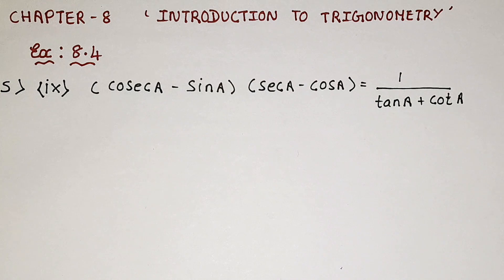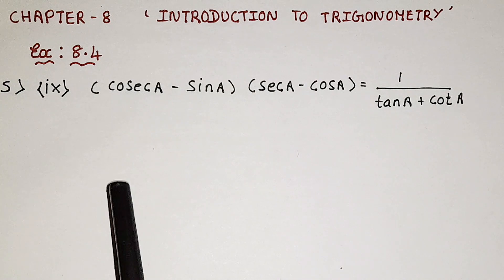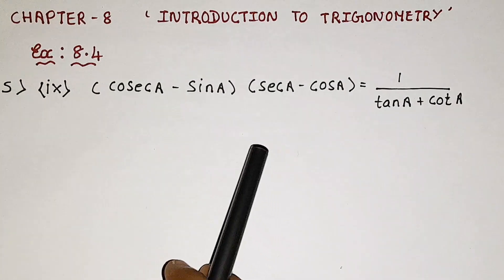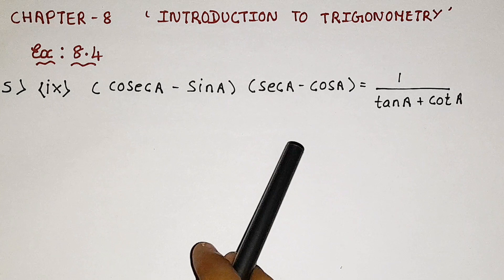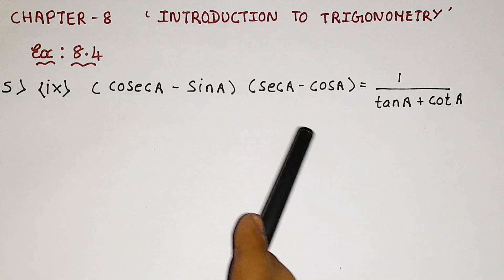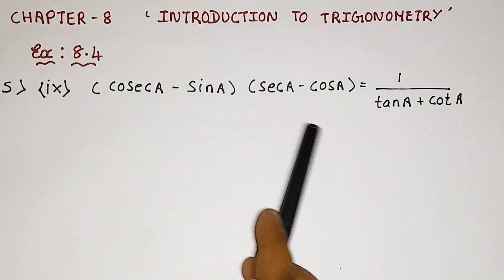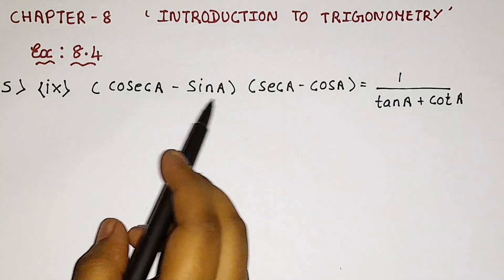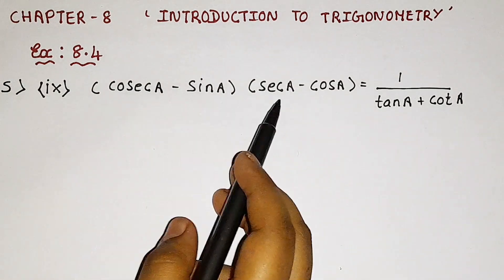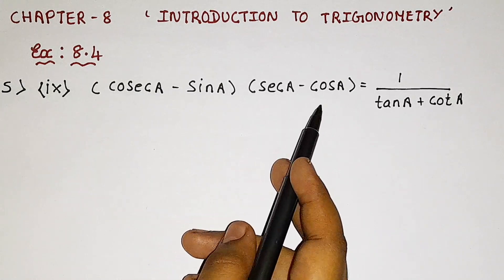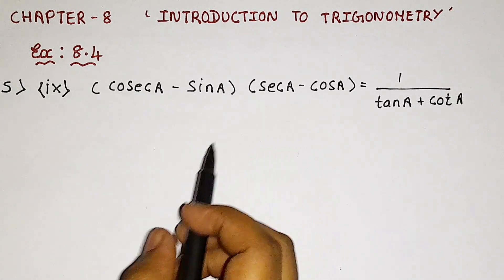So now we are supposed to show that LHS is equal to RHS. We are supposed to solve them separately. So for that, let us solve this part. Here first we have cosecant A minus sin A, in brackets, times secant A minus cos A.